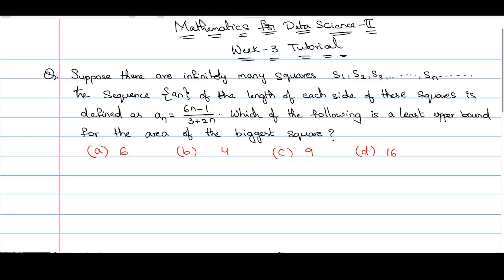Suppose there are infinitely many squares s1, s2, s3, and so on, sn, and so on. The sequence an of the length of each side of these squares is defined as an equals 6n minus 1 divided by 3 plus 2n. So this means a1 is the length of side of square s1, a2 is the length of side of square s2, and so on.